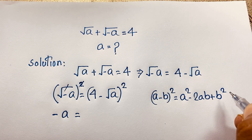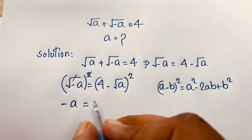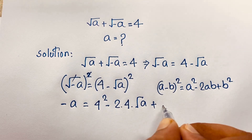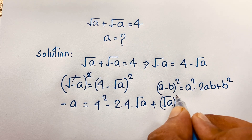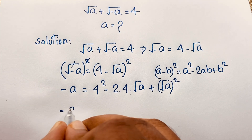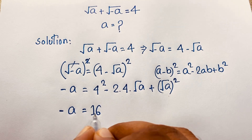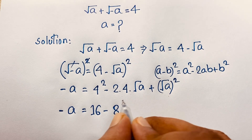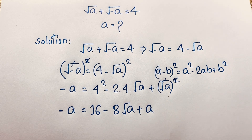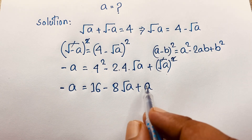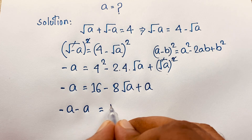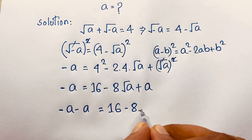According to this identity, I can say it will be 4² minus 2 times 4 times square root A plus (square root A)². Here A is 4 and B is square root A. Then negative A is equal to 4² which is 16, minus 2 times 4 which is 8, times square root A. The square cancels to give A.